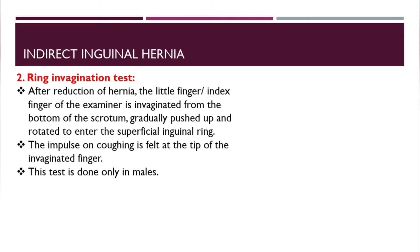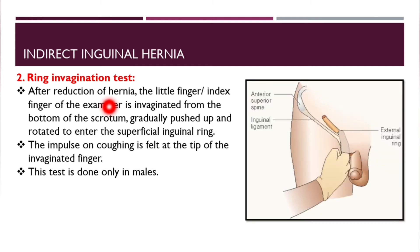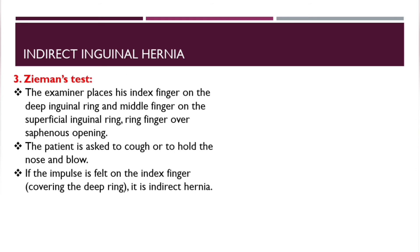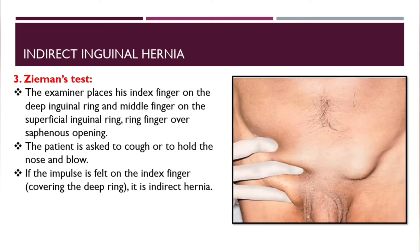The second test is called the ring invagination test. After reducing the hernia, the little finger or index finger of the examiner is invaginated from the bottom of the scrotum, gradually pushed up and rotated to enter the superficial inguinal ring. The impulse on coughing is felt at the tip of the invaginated finger. This test is only done in males.